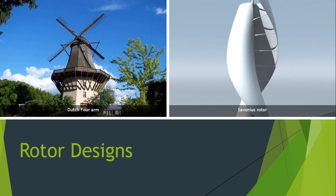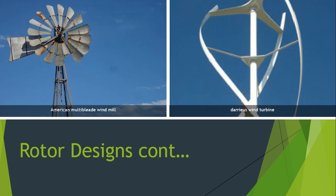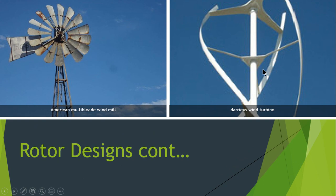There are various rotor designs. The first is the Dutch four-arm, and the next is the 7S rotor. The basic difference is that the Dutch four-arm is a horizontal axis design while the 7S rotor is a vertical axis wind turbine. The other two designs are the American multi-blade windmill, which has multiple blades attached to the rotor, and the Darius wind turbine — horizontal and vertical designs respectively.